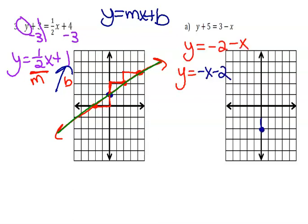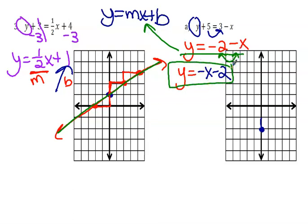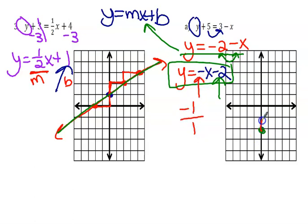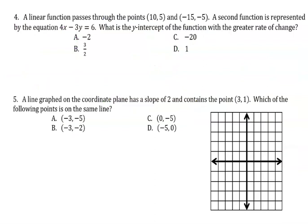Number four: I had to get y by itself — I moved the 5 and got y equals negative 2 minus x. That's not quite in slope-intercept form, so I switch the terms: my equation is y equals negative x minus 2. My starting point is negative 2 on the y-axis. A negative one slope means negative one over one, so I go up one and left one — up one, left one. There's my graph.